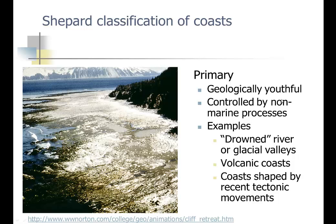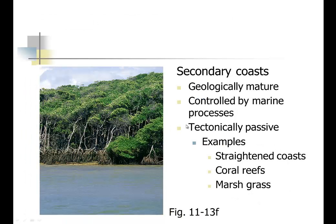We have the Shepard classification of coasts, with primary and secondary coasts. Primaries are more geologic and more youthful. You can see ice in the background scouring down into bedrock — drowned river valleys because of glaciers, volcanic coasts, and coasts that were tectonically active with mountain building. There's also cliff retreat.